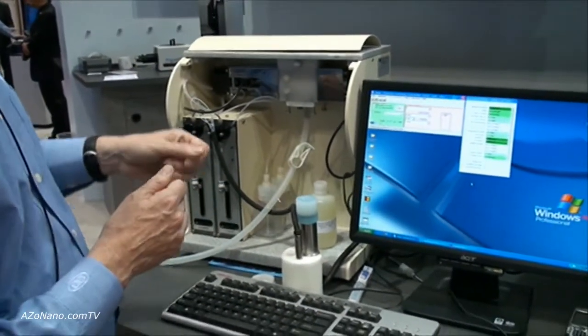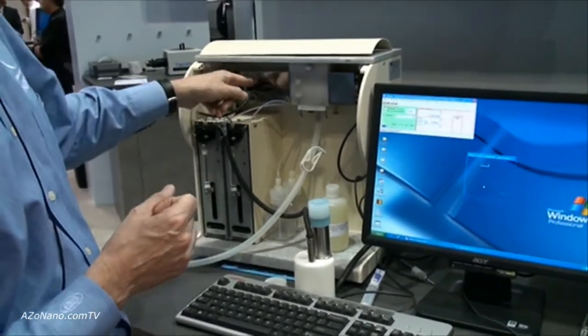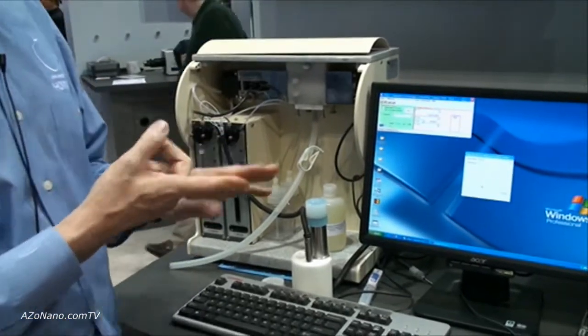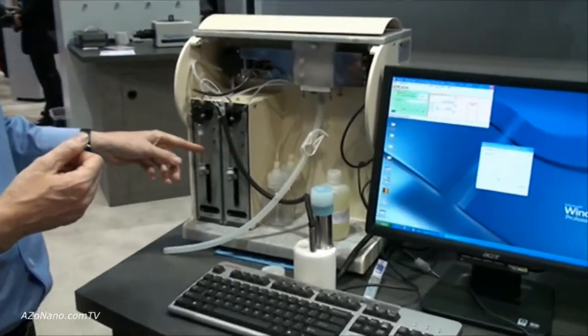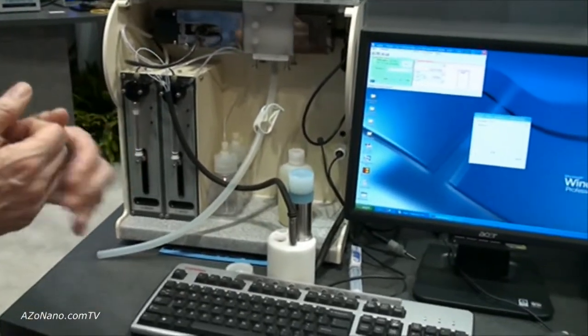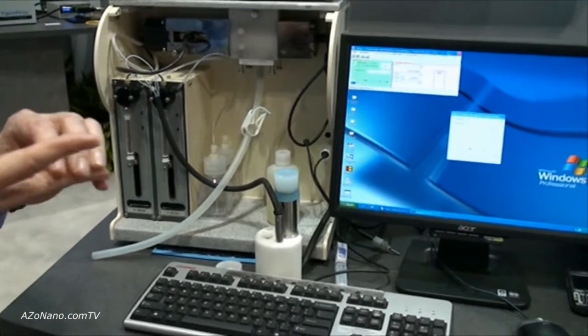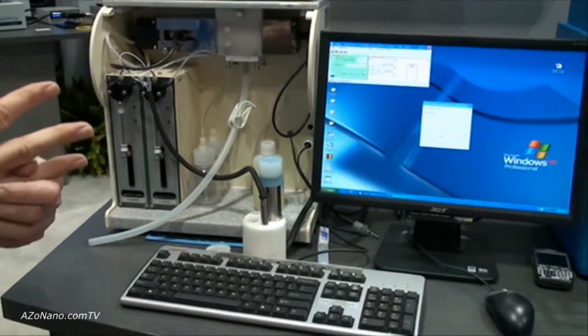This is set up to do a particle size distribution. So this is going to do particle size followed by zeta potential and what you see here also is we could perform a titration looking at the change in zeta potential and particle size as a function of a change in pH or surface concentration.